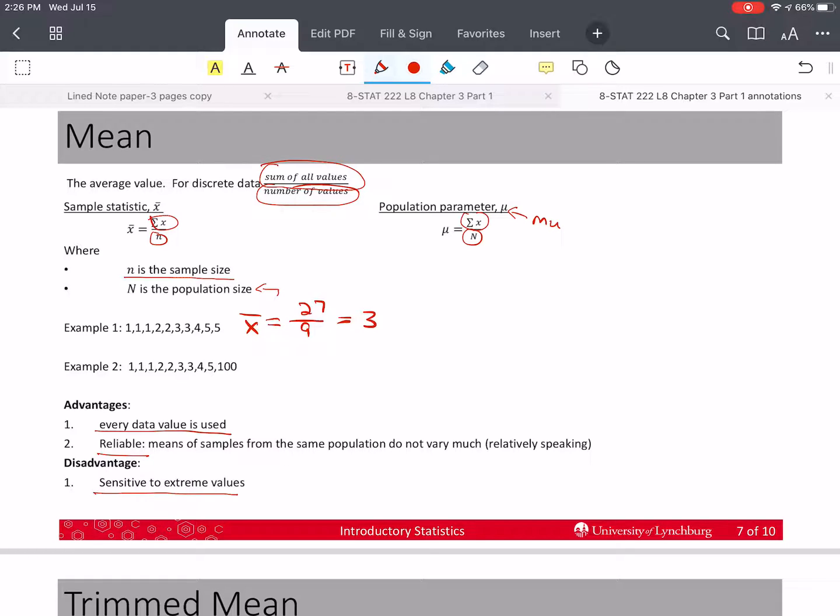For this example, x bar is equal to 27 divided by 9. There are 9 values here, so that's 3. Here, we have the same 9 values, except I've switched out a 5 and a 100. So now the sum of the values is 122. So I changed this, so there are 10 values here. And let's add them up real quick. I've got 27 divided by 10, and that's 2.7.